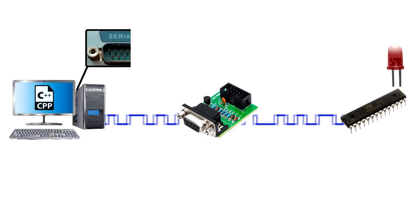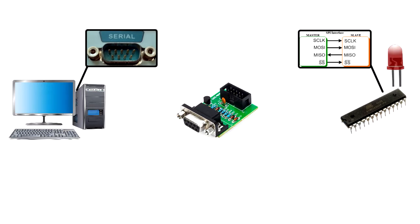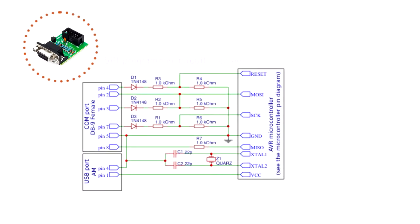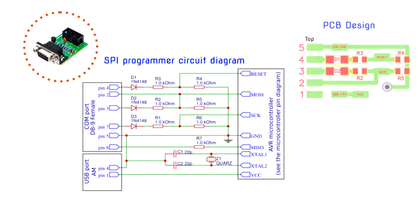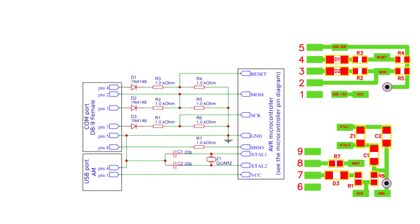A microcontroller programmer acts as an interface between the PC and the target controller. The API software of the programmer reads data from the hex file stored on the PC and feeds it into the controller's memory, transferring data using serial, parallel, or USB port. The ATmega32 is programmed using the pins meant for SPI communication. Serial Peripheral Interface is a synchronous, full-duplex protocol, also known as a three-wire interface protocol because it needs three communication lines named MISO, MOSI, and SCK. SPI protocol needs two devices: one master and one slave.